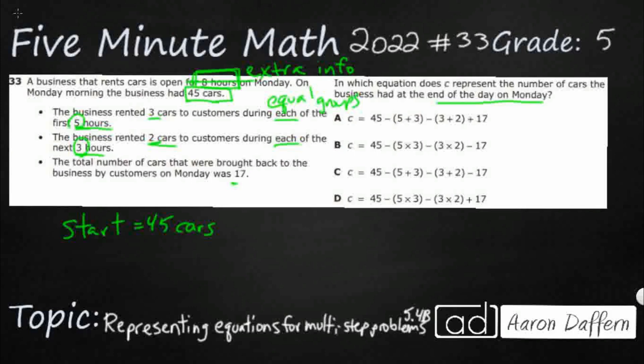We're going to do something with the 45, the five, three, three, two, and 17. It's just a matter of what operations we're going to use. We're going to start with 45. That's why all of our answer selections have that. We're going to start with 45. That's what we're going to start with.